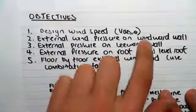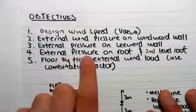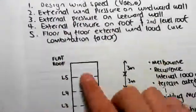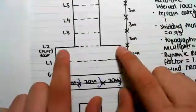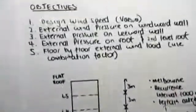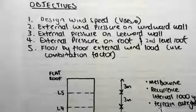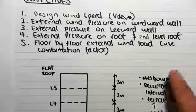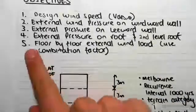We're finding external wind pressures on the windward and leeward walls, finding external roof pressures on this top roof and the secondary roof, and then we're going to do the floor-by-floor external wind load. We're going to be using the combination factor at this stage, which we didn't do in the previous video.